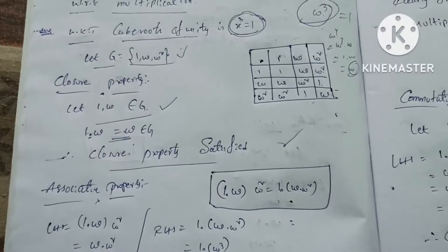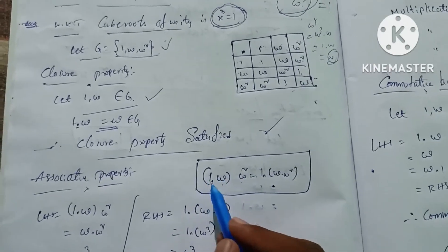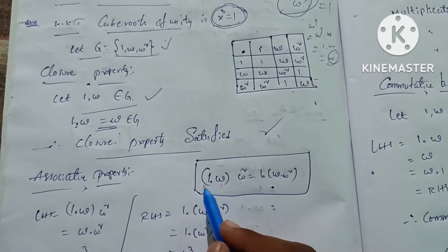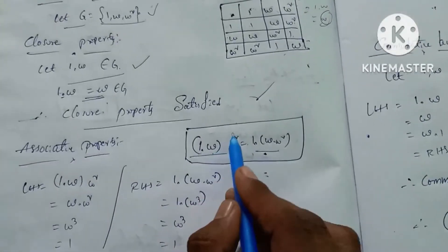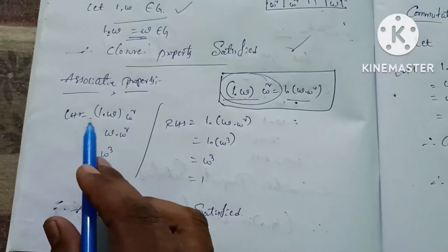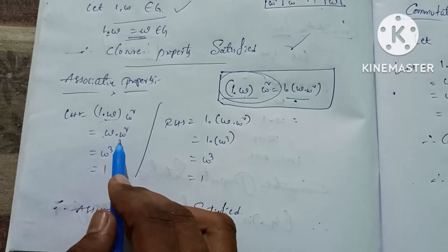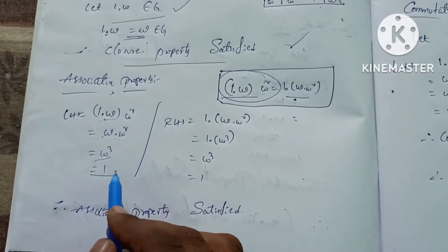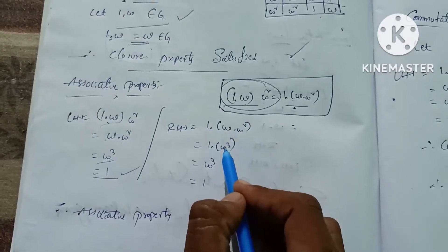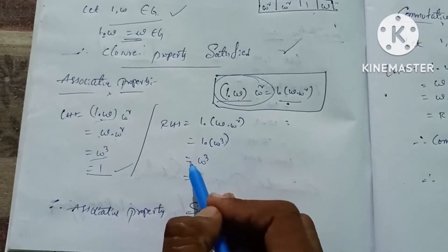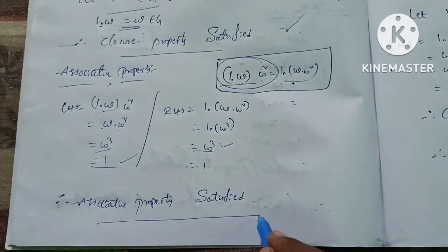Associative property: we have three elements 1, omega, omega squared. We verify (1 into omega) into omega squared equals 1 into (omega into omega squared). Left-hand side: 1 into omega is omega, then omega into omega squared is omega cubed equals 1. Right-hand side: omega into omega squared is omega cubed equals 1, then 1 into 1 equals 1. LHS equals RHS, therefore associative property is satisfied.